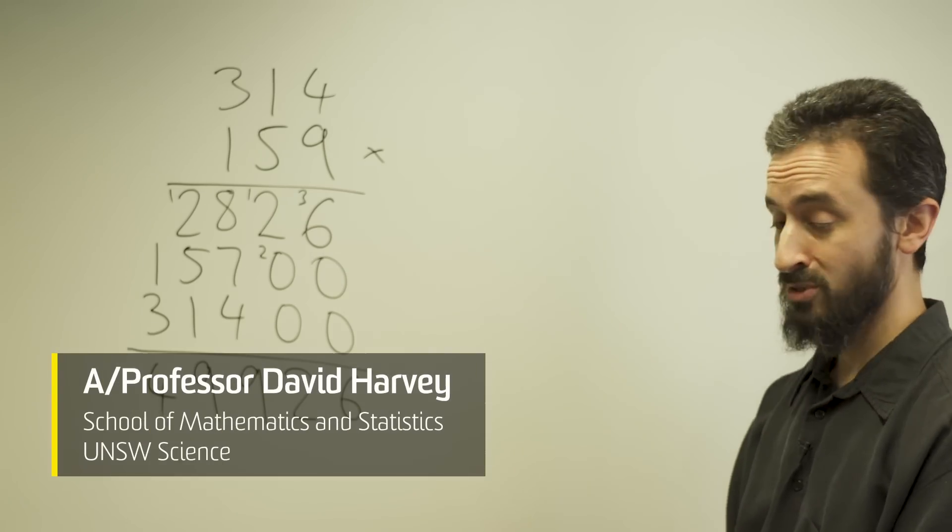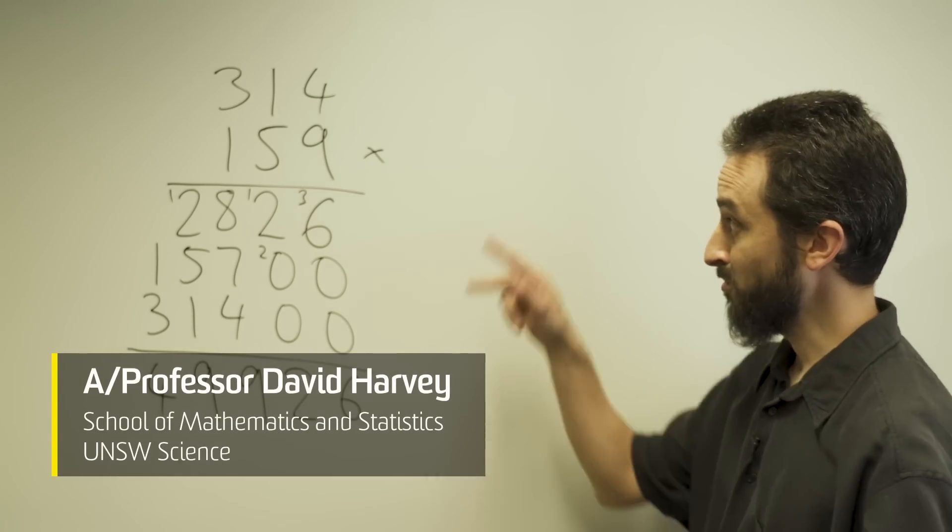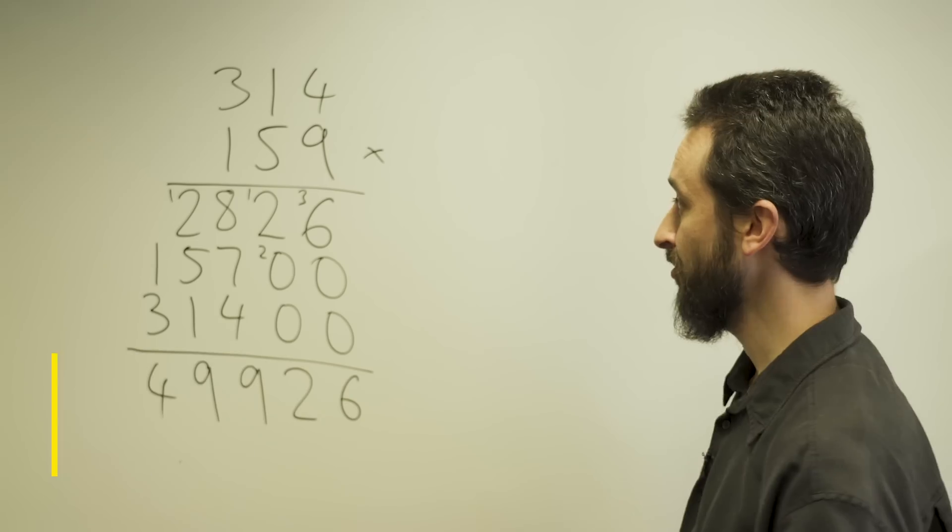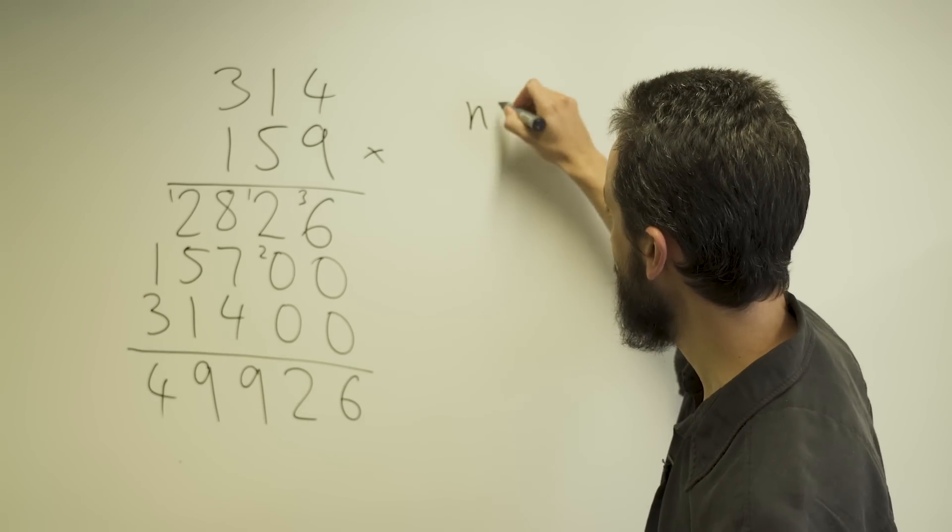Okay, so here is a multiplication problem that I prepared earlier. I'm multiplying two numbers with three digits. So here my n, the number of digits, is 3.